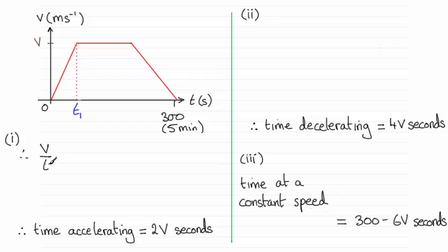Therefore V divided by t1 is equal to that acceleration of 0.5. So just a question of rearranging this, making t1 the subject. So t1 would equal V divided by 0.5 and that gives us 2V.